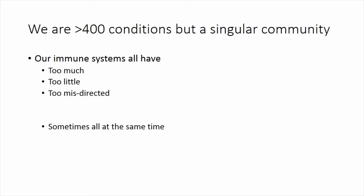We are a singular community, and what holds us together is our immune systems have made a mistake. They either are doing something too much, something too little, or they are misdirected in the wrong direction—and sometimes all at once. You would think if you had an immune deficiency, you couldn't possibly get an autoimmune disease because isn't that the opposite? But when immune systems make mistakes, they can make mistakes in multiple ways.